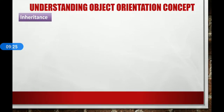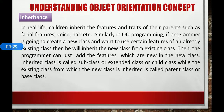Next is inheritance. In real life, children inherit the features and traits of their parents, such as facial features, voice, and hair. Similarly, in object-oriented programming, if a programmer wants to create a new class and use certain features — like properties and behavior — of an already existing class, then the new class inherits from the existing class. The programmer can then add only the new features to the new class. The inherited class is called a subclass, extended class, or child class, while the existing class is called the parent class or base class.